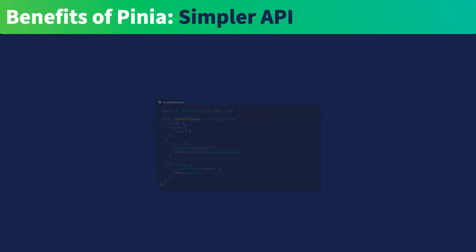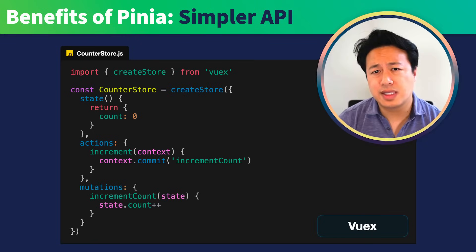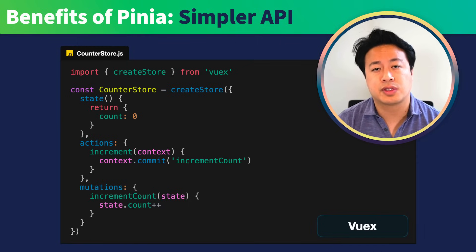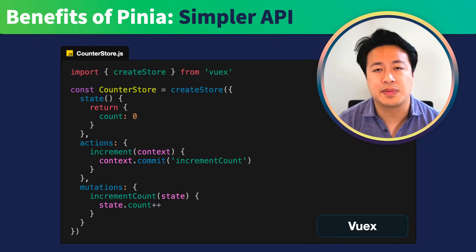One of the biggest criticisms of VueX is the complexity and repetitiveness behind the action and mutation pattern. If you follow the standard practice, every state change required a lot of boilerplate. Here we have a VueX store that's tracking the state of a counter app, where we have the current count being tracked inside of the state. We have actions that will commit a mutation in order to increment the count, and then the mutation itself, which actually increments the count. What we'll notice is that the action and the mutation are quite similar, and as stores got more complicated, this led to a lot of repetitiveness and boilerplate.